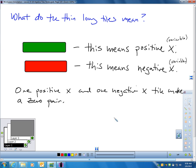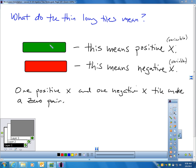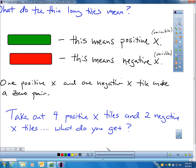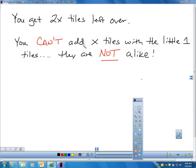If I take one positive variable tile and one negative variable tile and put them together, I'm going to get a zero pair out of that. If you take out four positive variable tiles and two negative x tiles and put them together, you're going to have two x tiles left over. The two red and two green make a zero pair, you're left with two green tiles.